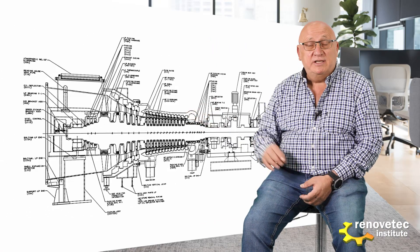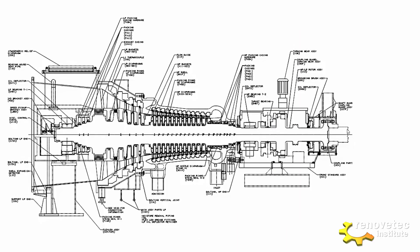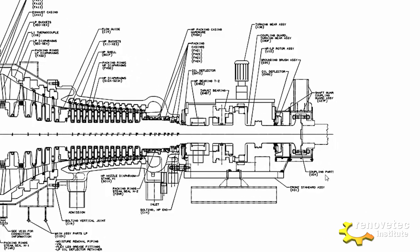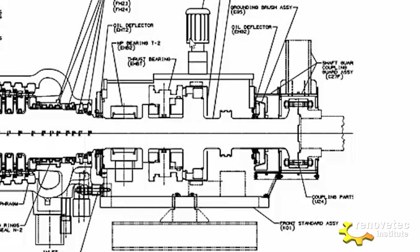Looking at this interesting schematic, we can see the main elements of a turbine. We recognize here that all of this element is the rotor — composed by the shaft and the blades. This is the casing, going from right to left. We recognize here the coupling between the turbine and normally the generator. And here we can see the motor for the turning gear system.